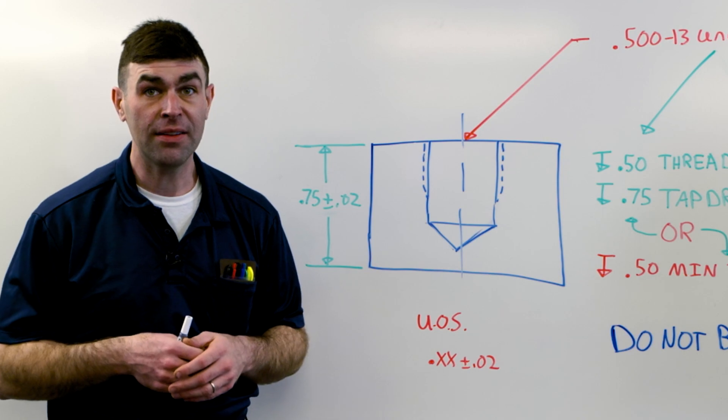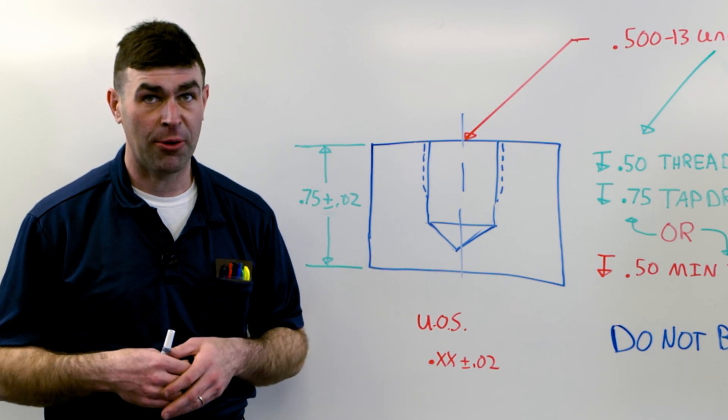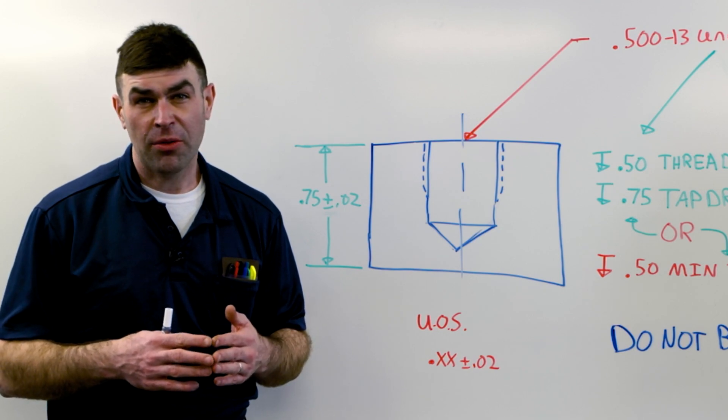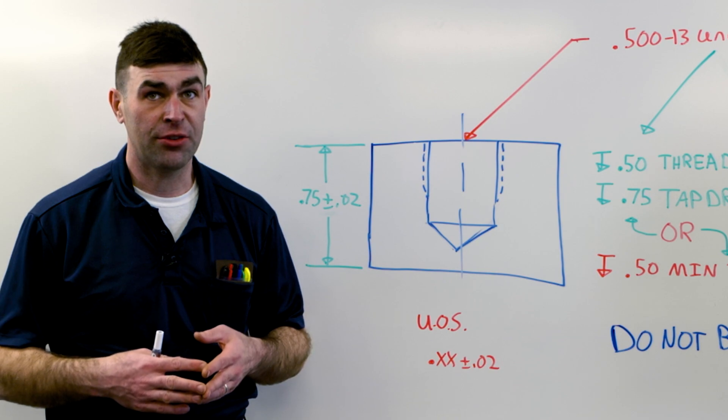Of course, there's more to threads than this, but I've seen it a whole lot where you see a thread call out with a linear dimension. Normally, it don't have a plus or minus, so it goes to title block and it can create an issue.